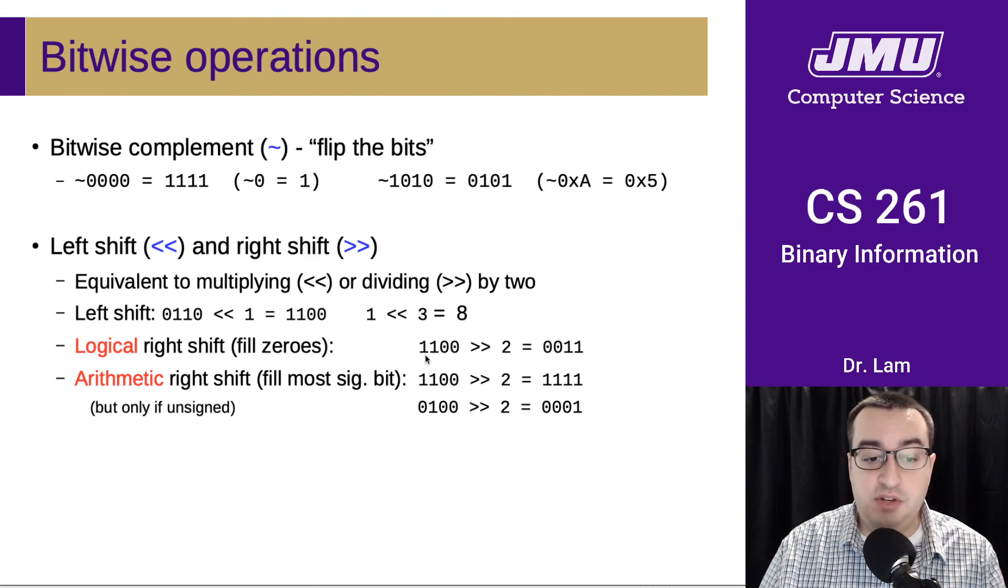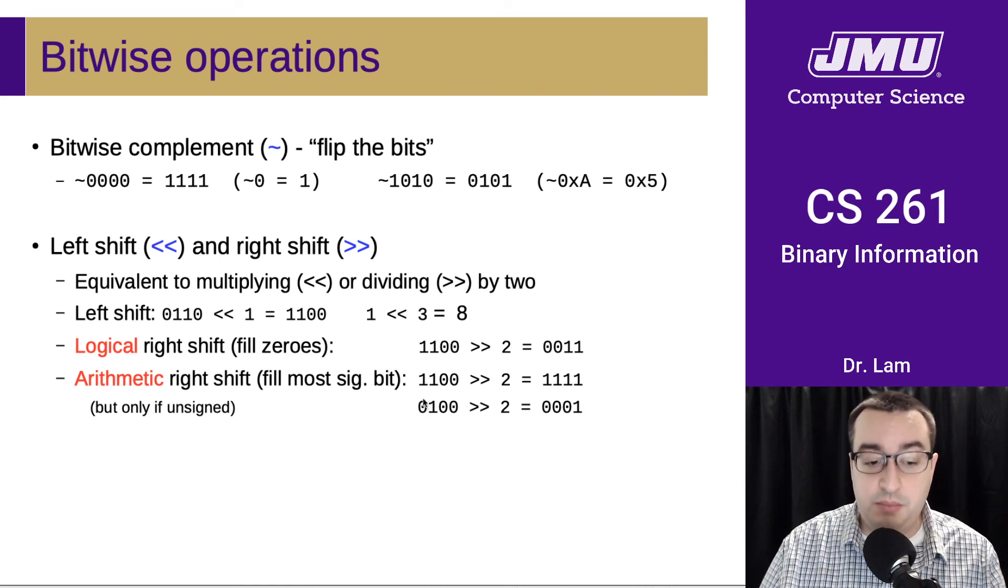Here we're shifting this value by two. These ones become these ones here, and then we just fill with zeros. If we're doing an arithmetic right shift, then what we do depends on the value of the first bit.